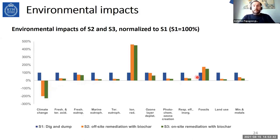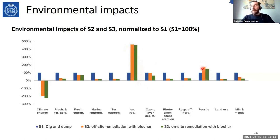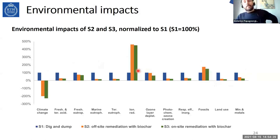There are only two exceptions: ionizing radiation and fossils. This is because of electricity consumption in the pyrolysis plant — a significant part of Sweden's electricity comes from nuclear energy, so ionizing radiation is an impact associated with that electricity production, and likewise fossils, due to the uranium used for nuclear energy. Overall, the environmental performance of the biochar scenarios is quite good, apart from ionizing radiation and fossils.